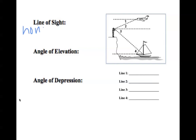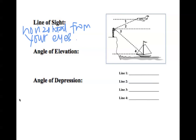Line of sight. This is the horizontal from your eyes. If you look over to the diagram on the right, this is going to be considered your line of sight. It's just the horizontal if you're looking straight ahead.